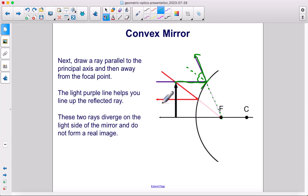So these two rays, these reflected rays, one is here, one is here. You can see on the light side of the mirror, they diverge. They do not form a real image.